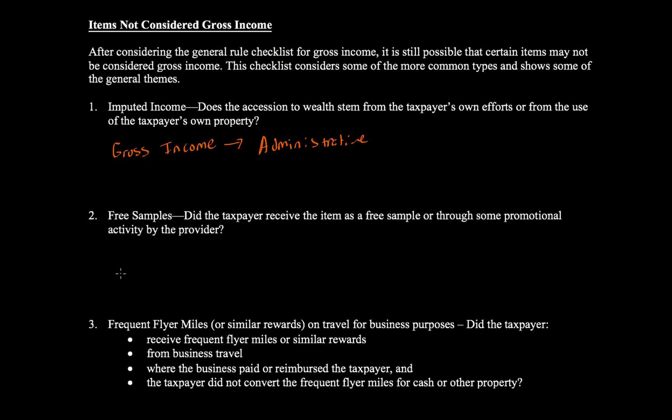Another item not included in gross income is free samples. If you go to Costco or Sam's Club and get free samples, your net worth technically goes up. When I receive books from publishers, these are considered free samples — free to me, I don't have to pay for them. But gross income does not include free samples because, again, it's an administrative nightmare. So both imputed income and free samples are not gross income, reflecting the same administrative theme throughout the Internal Revenue Code.